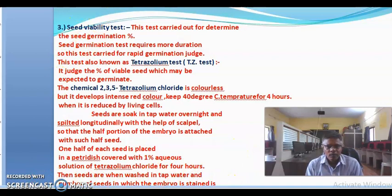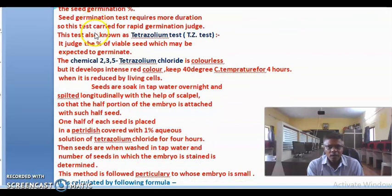One half of each seed is placed in petri dish and it is covered with 1% aqueous solution of tetrazoleum chloride for 4 hours at 40 degrees Celsius temperature. Then the seeds are washed in water and seeds are counted in which the embryos are stained and determined.